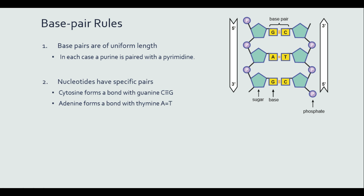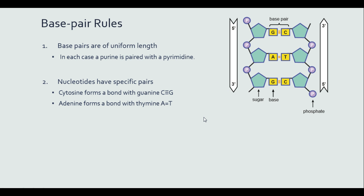Nucleotides have specific pairs. Cytosine always forms a bond with guanine — it's a triple bond as you can see right here — and adenine always forms a bond with thymine, which is a double bond. When we talk about bonds, we're talking about covalent bonds.